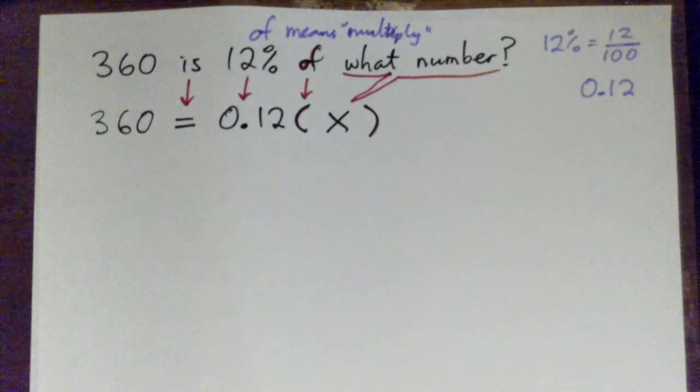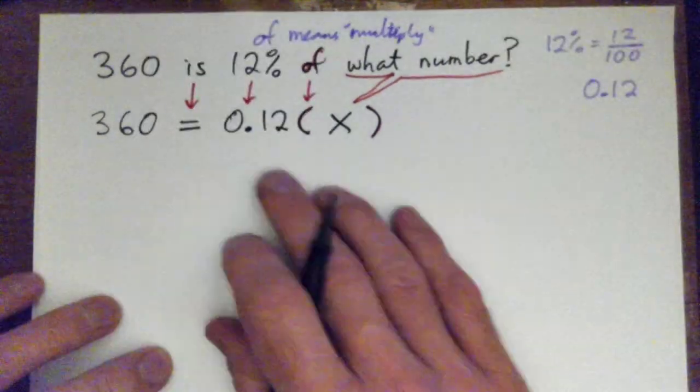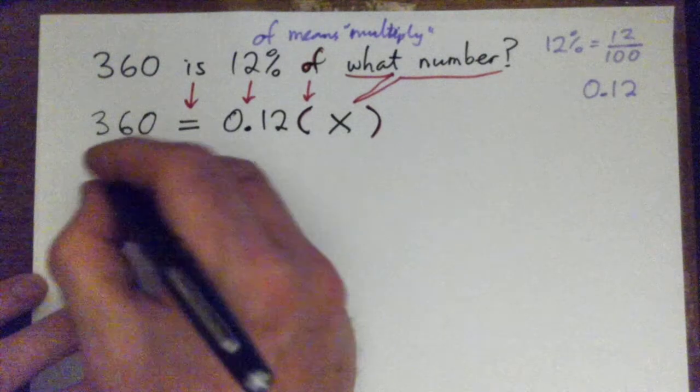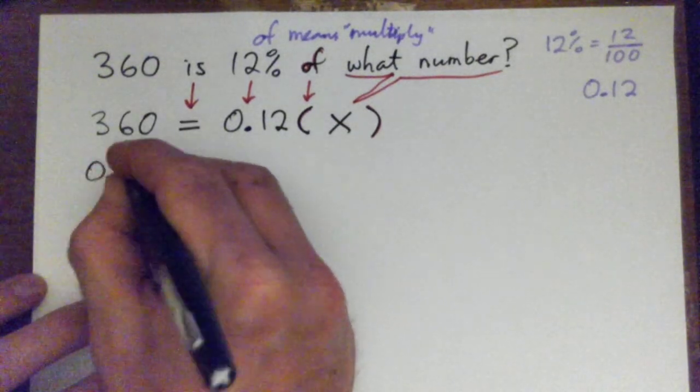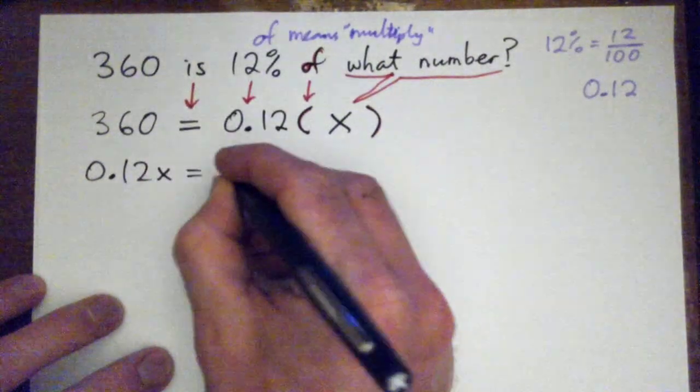Are we allowed to do the calculators for this part? It would be best not to if possible, yeah. Best to do as much of this without a calculator as possible. So we have basically, I'll write it a different way - another way to write it: 0.12 times X equals 360, right?